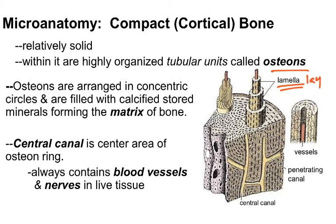Lamella means layer. Think 'laminate' — when you laminate a piece of paper, you're adding layers to it. The lamella are primarily calcified matrix — that's where the mineral store of the bone is.